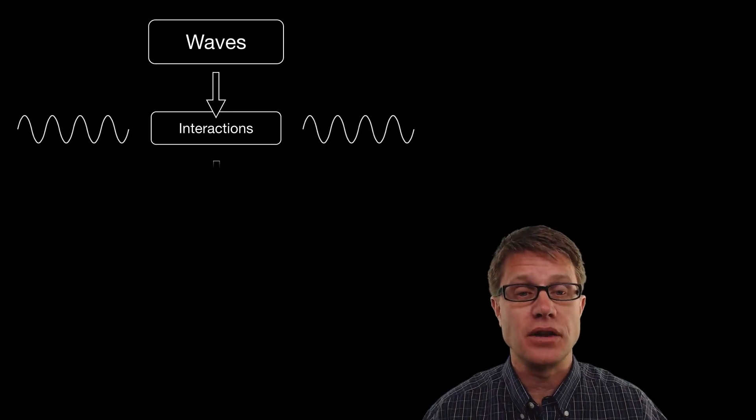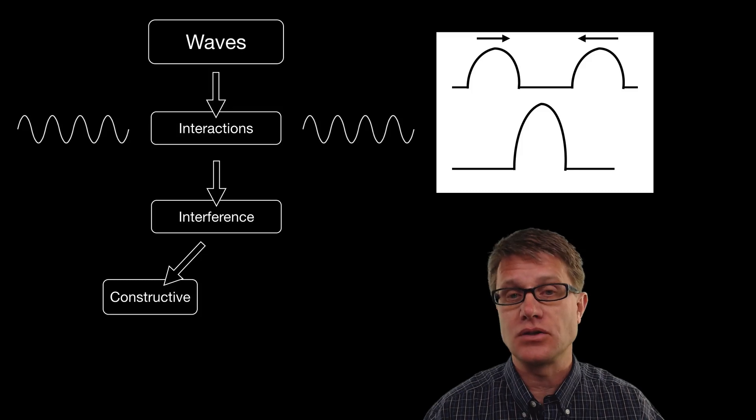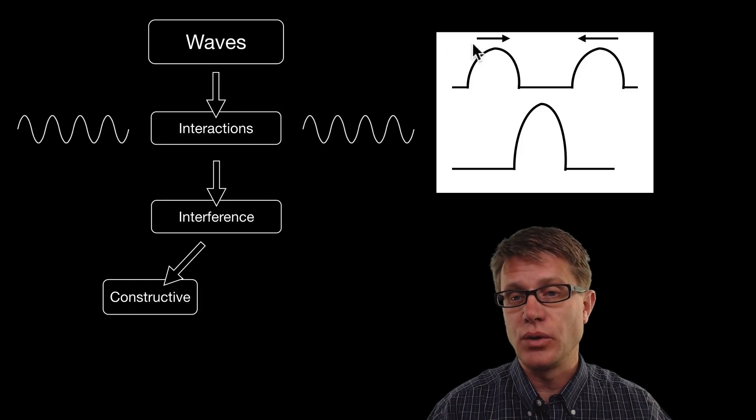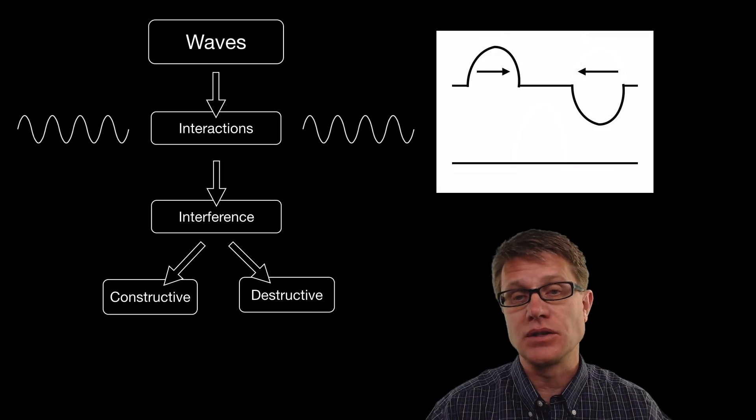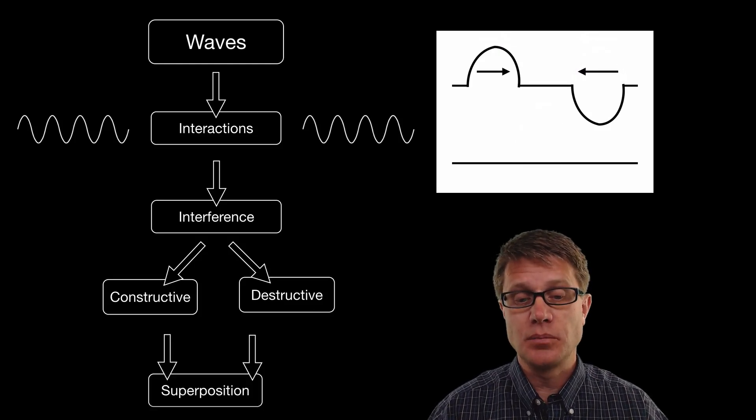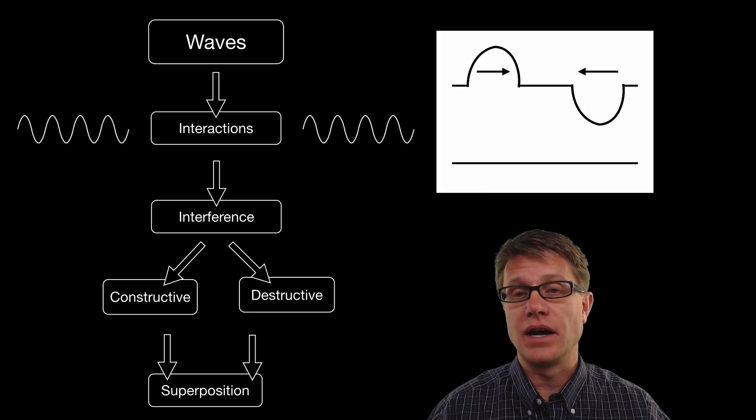But as they move through each other they will interfere with one another. And that interference can be constructive. In other words when two waves come at each other, we build one giant wave. Or it can be destructive. In other words they cancel each other out. But superposition is that idea that when they are together we add those two values together.